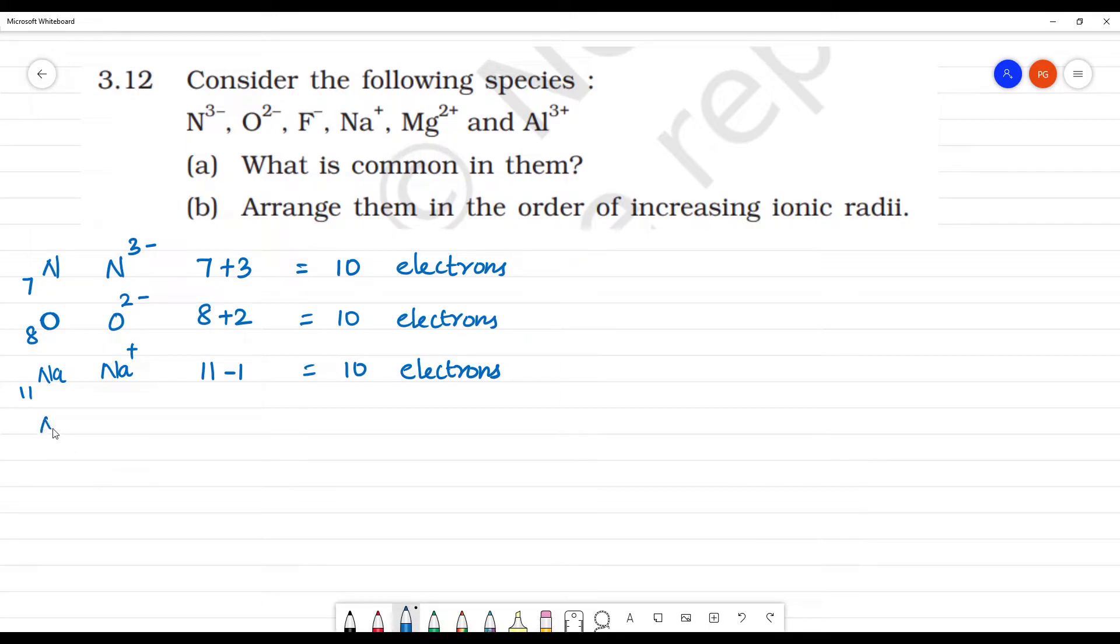Mg²⁺ is 12 minus 2, which equals 10 electrons.